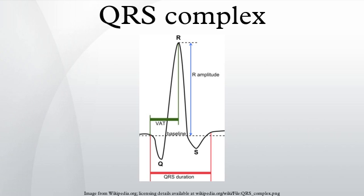The duration, amplitude, and morphology of the QRS complex are useful in diagnosing cardiac arrhythmias, conduction abnormalities, ventricular hypertrophy, myocardial infarction, electrolyte derangements, and other disease states.